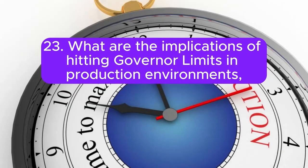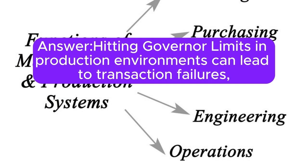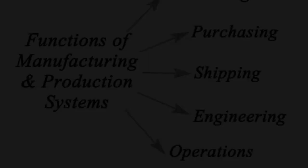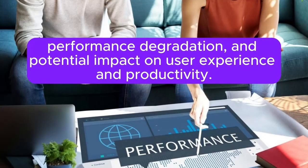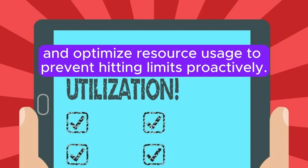Question 23: What are the implications of hitting governor limits in production environments, and how do you mitigate the impact on users and system performance? Answer: Hitting governor limits in production environments can lead to transaction failures, performance degradation, and potential impact on user experience and productivity. To mitigate the impact, you can implement error handling and recovery mechanisms, monitor system performance, and optimize resource usage to prevent hitting limits proactively.